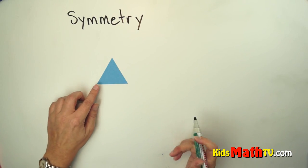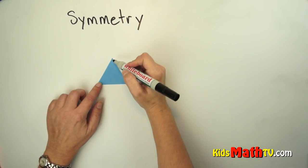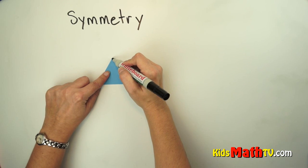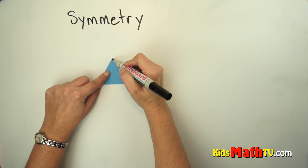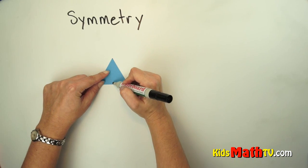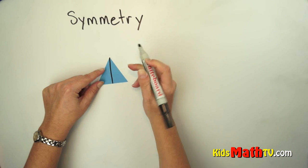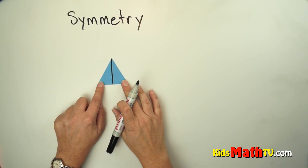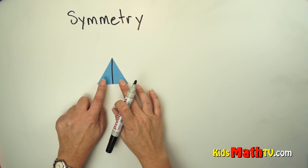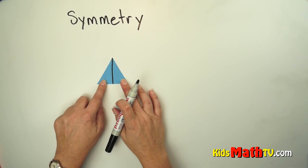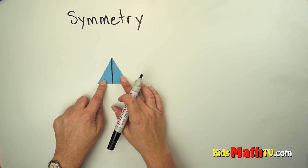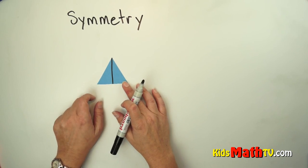In other shapes, we could take a line from the very tip of the triangle to the base of the triangle. Those two shapes would be exactly the same shape and size, so this is a line of symmetry.